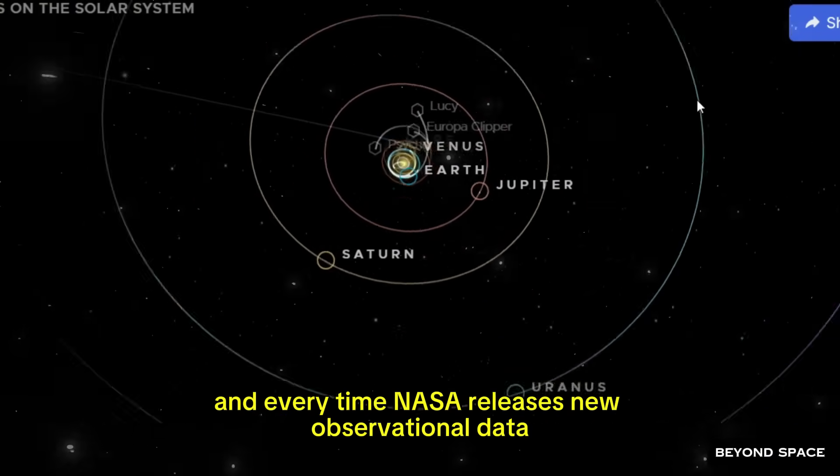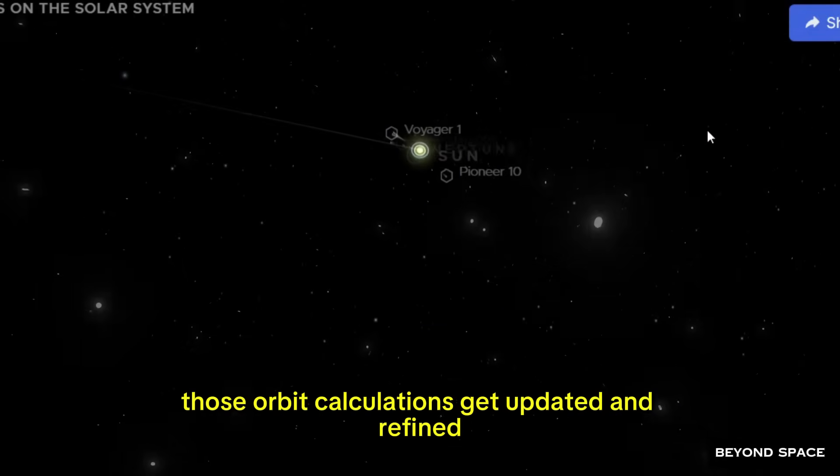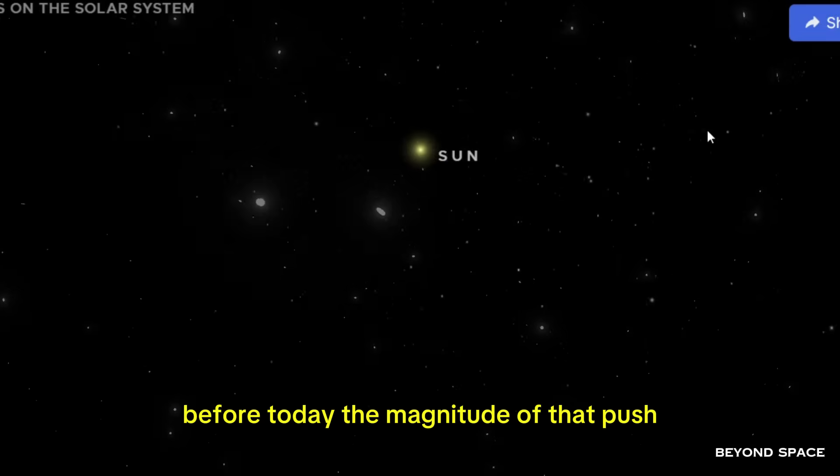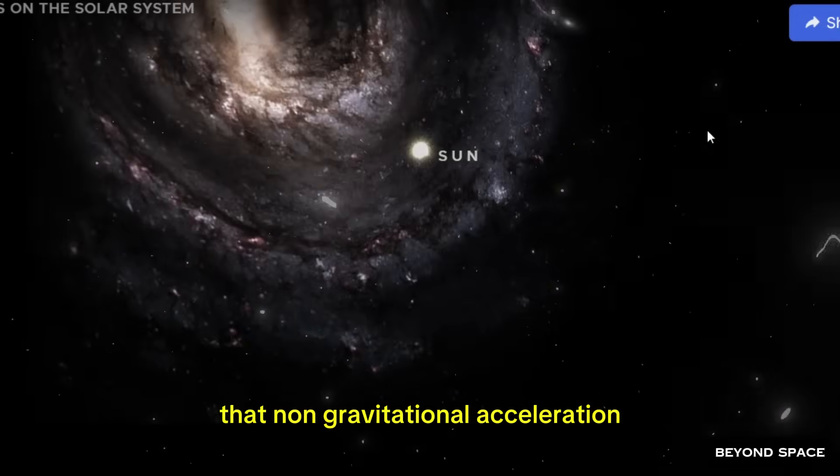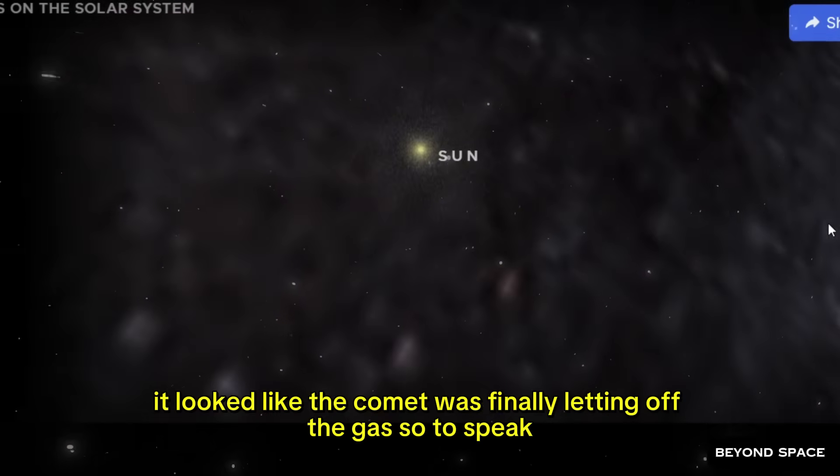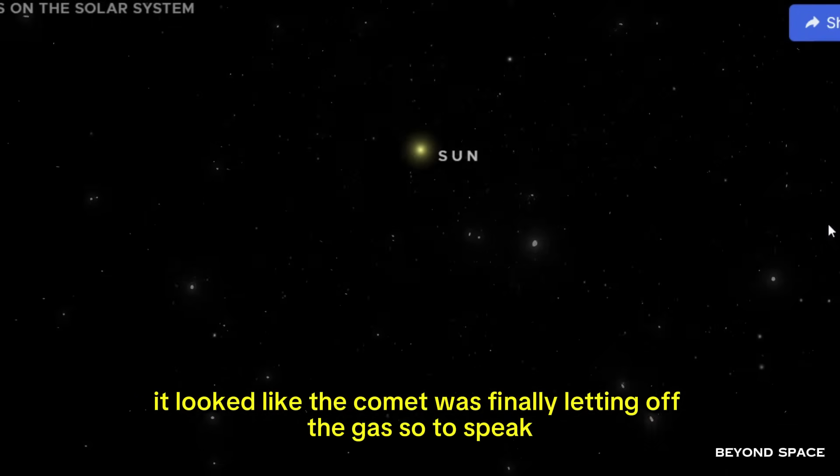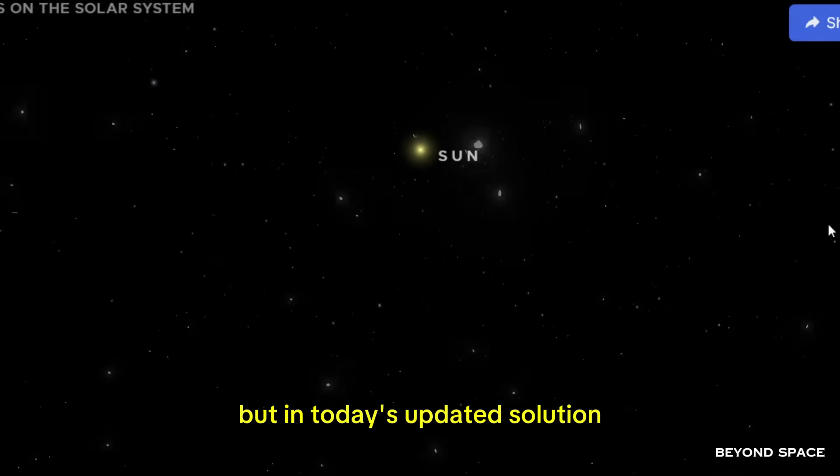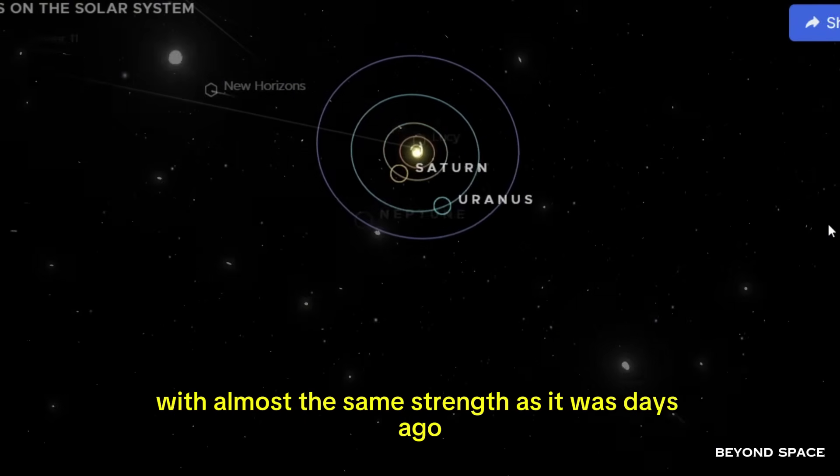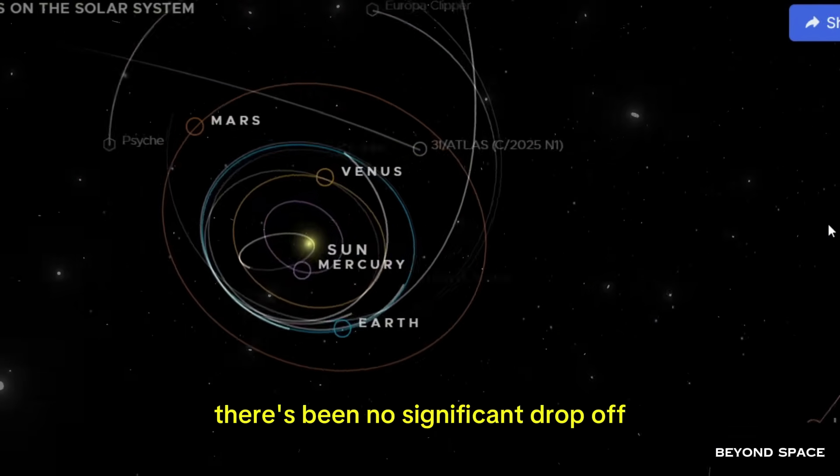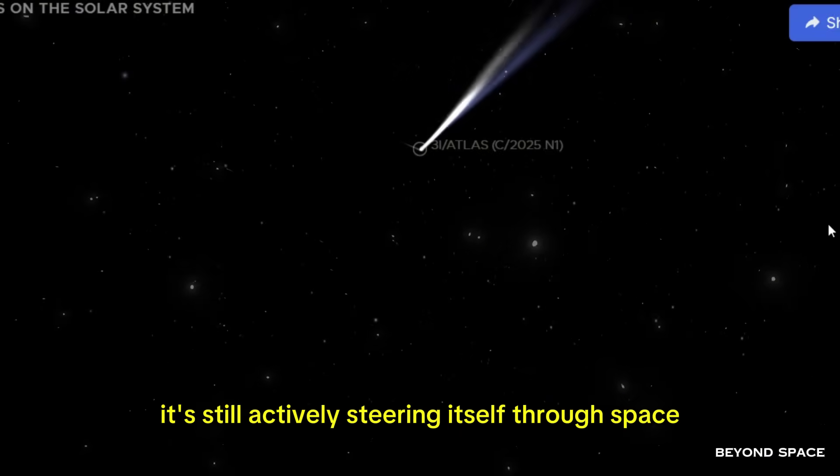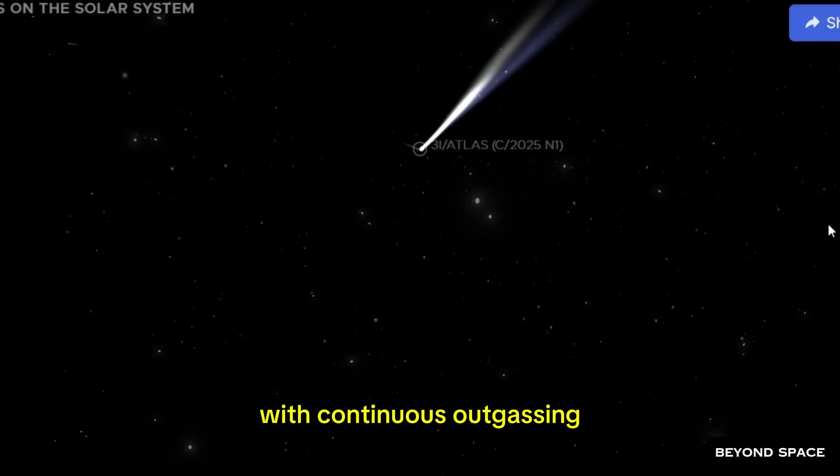Every time NASA releases new observational data, those orbit calculations get updated and refined. In the previous orbital solution, before today, the magnitude of that push, that non-gravitational acceleration, it looked like it was starting to ease up. It looked like the comet was finally letting off the gas, so to speak. But in today's updated solution, it levels out and then it holds steady. The comet is still being shoved by its own jets with almost the same strength as it was days ago. There's been no significant drop-off. It's not relaxing. It's not coasting. It's still actively steering itself through space with continuous outgassing.